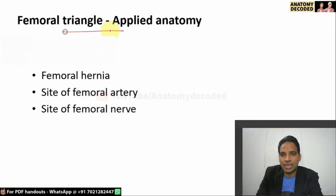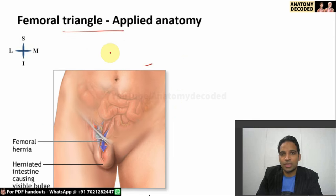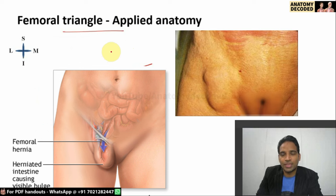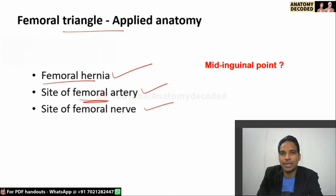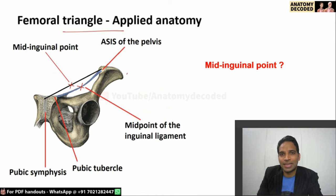In applied anatomy, femoral hernia is the most important topic. Femoral hernia means contents of the abdomen are protruding into the femoral triangle through the femoral canal. It is more common in females because of the wider pelvis, which makes the femoral canal larger. The femoral artery is located at the mid-inguinal point, which is the midpoint between the pubic symphysis and the anterior superior iliac spine.